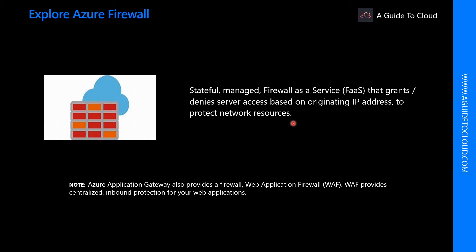The service is fully integrated with Azure Monitor for logging and analytics. Azure Firewall provides many features including built-in high availability, unrestricted cloud scalability, inbound and outbound filtering rules, and Azure Monitor logging. You can configure application rules that define FQDNs and network rules that define source address, protocol, destination port, and destination address. Azure Application Gateway also provides a firewall called Web Application Firewall (WAF), which provides centralized inbound protection for web applications against common exploits and vulnerabilities.